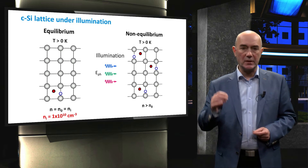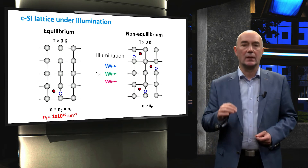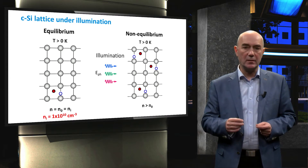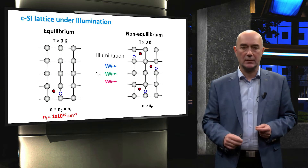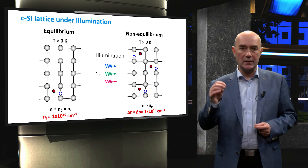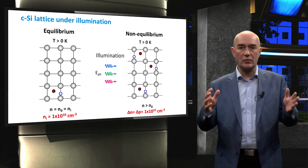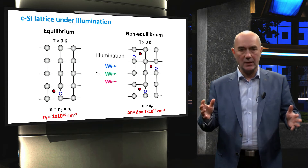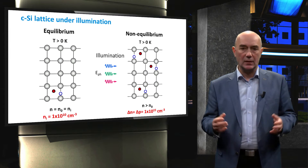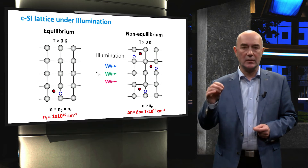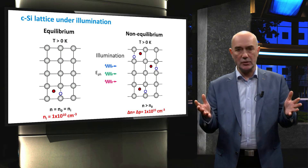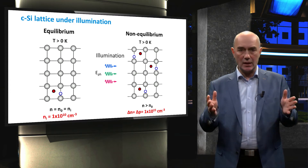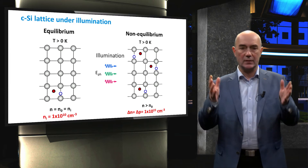The absorption of photons with energy higher than the band gap leads to the generation of extra electron-hole pairs, bringing the system into a non-equilibrium state. In this video, we assume that the illumination will increase the concentration of electrons and holes by 1×10¹⁵ pairs per cubic centimeter. We call this the excess carrier concentration. Under illumination, the concentration of excess electrons, delta N, is equal to the concentration of excess holes, delta P.